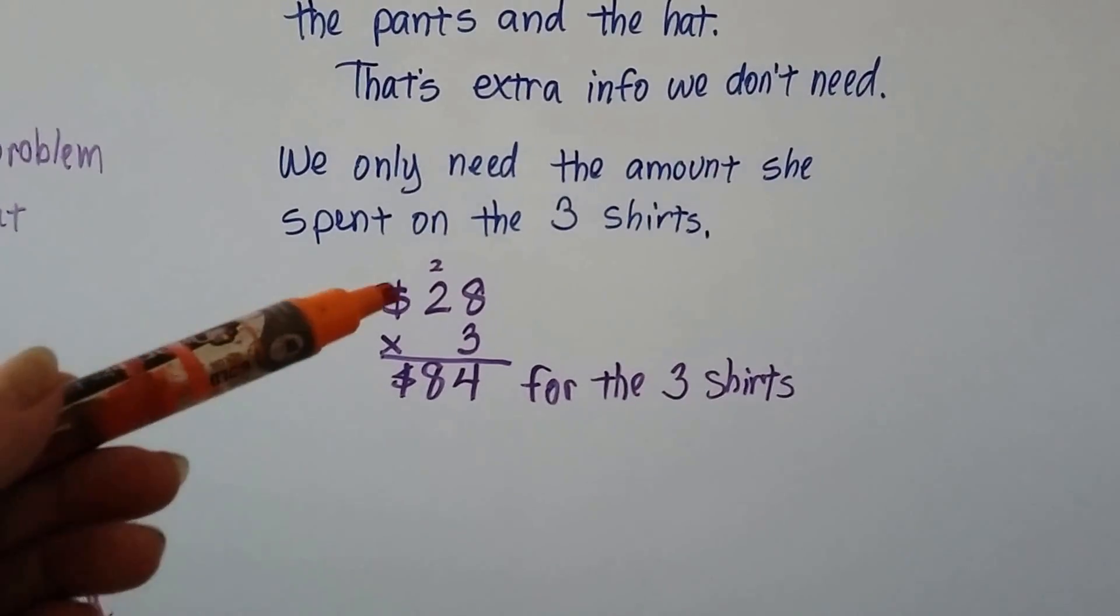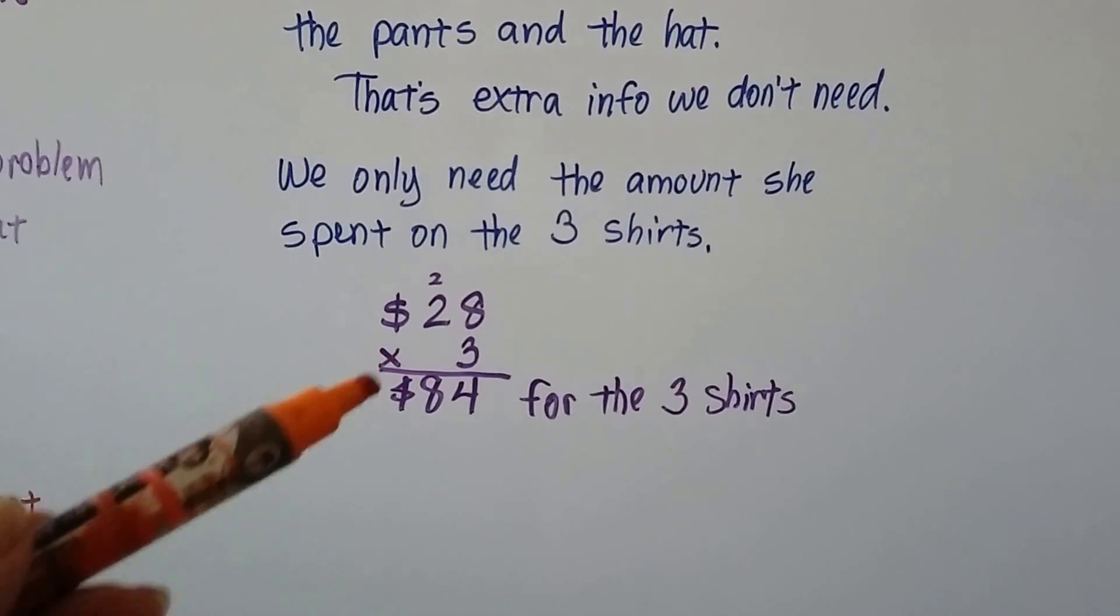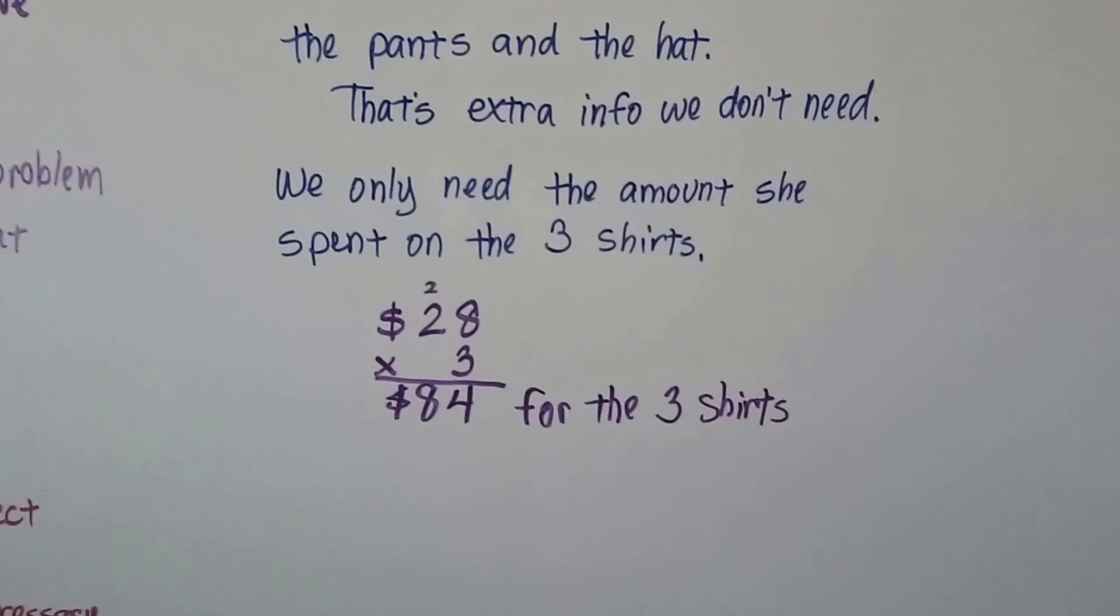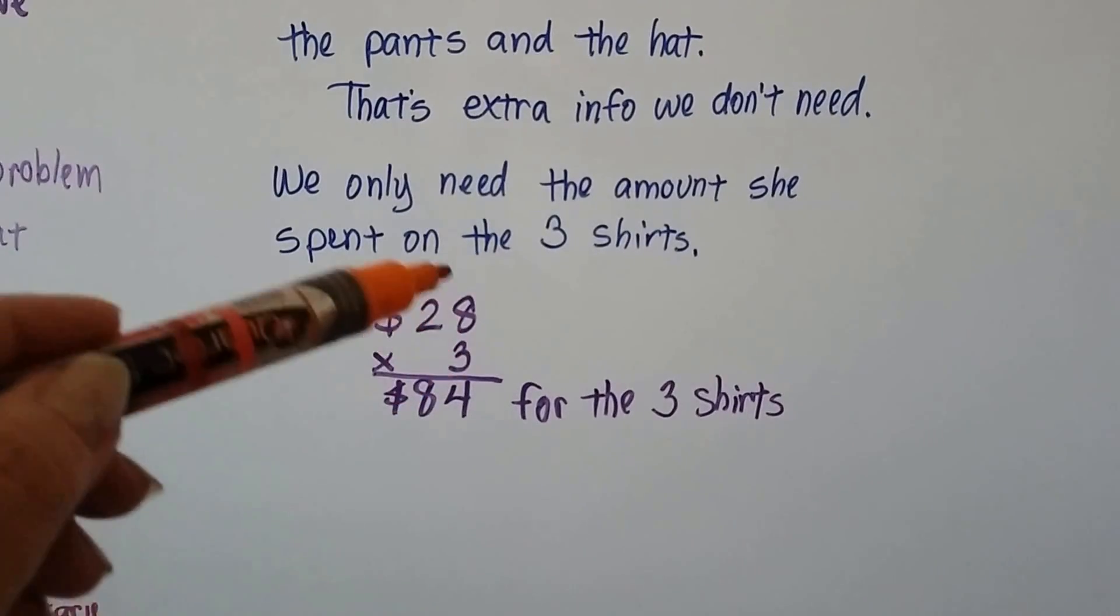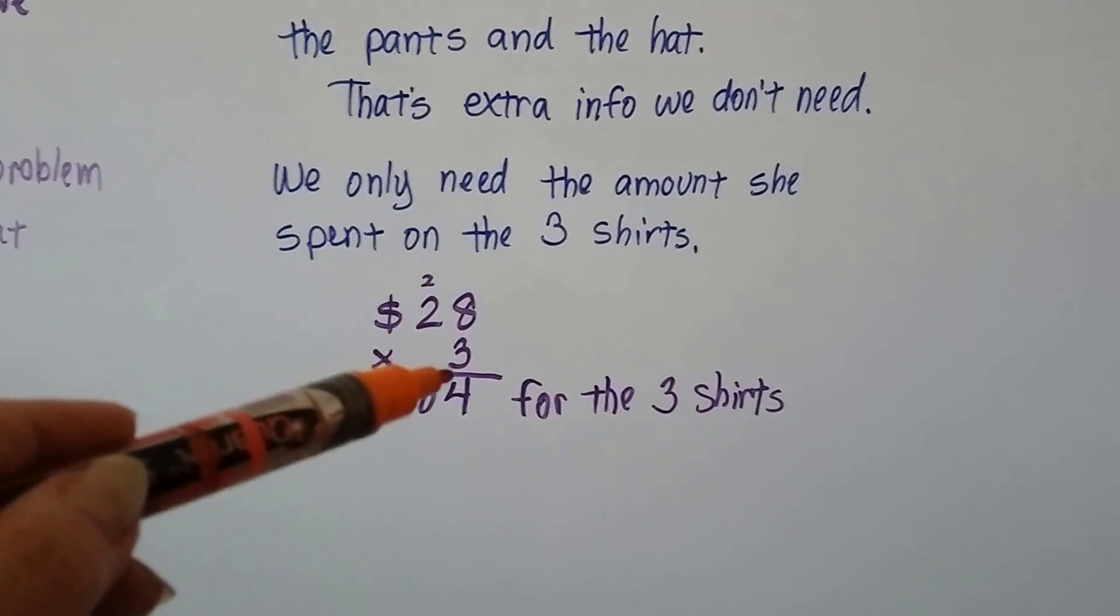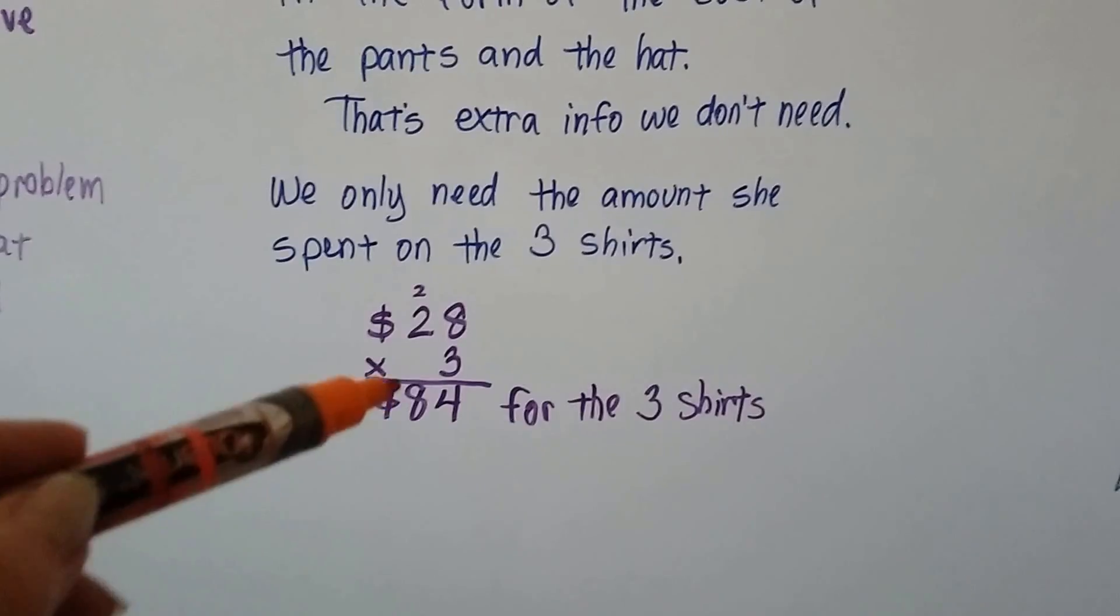So we do $28 times three and get $84 for the three shirts. Three times eight is $24. We regroup the two, put the four down. Three times two is six, seven, eight. $84.